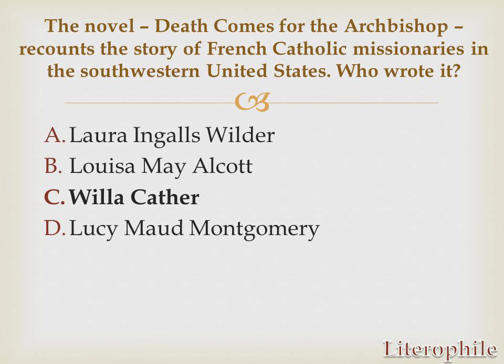Death Comes for the Archbishop is a 1927 novel by American author Willa Cather. It concerns the attempts of a Catholic bishop and a priest to establish a diocese in New Mexico territory. The entire narrative is based on two historical figures of the late 19th century, Jean-Baptiste Lamy and Joseph Projectus Machebeuf. It is a stylized retelling of their lives serving as Roman Catholic clergy in New Mexico. The narration is given in a third-person omniscient style, and Cather includes many fictionalized accounts of actual historical figures including Kit Carson, Manuel Antonio Chaves, and Pope Gregory XVI.